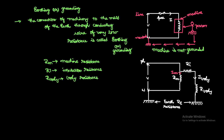IM is the current flowing in the machine, and I_body is the current flowing through the body. In the electrical equivalent circuit, the machine resistance and insulation resistance are present. When a person touches the machine, the insulation resistance and body resistance are connected in series, while the machine is in parallel. When earthing resistance is not provided, we can analyze the body current.